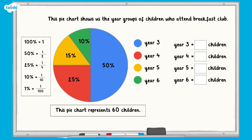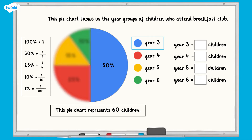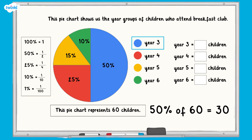We can use the information we have to work out how many children at breakfast club were from each year group. If the whole pie chart represents 60 children, we know that 100% equals 60. To work out how many of the children are in Year 3, we need to look at the blue sector. The blue sector represents 50%, or half of 60. To find half we divide by 2. 60 divided by 2 is 30, so 30 of the children are in Year 3.